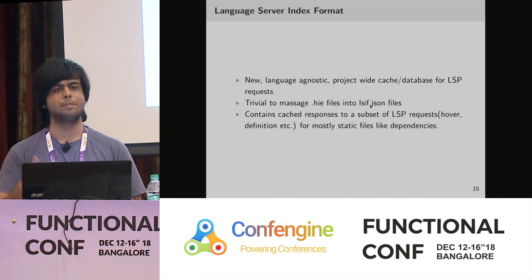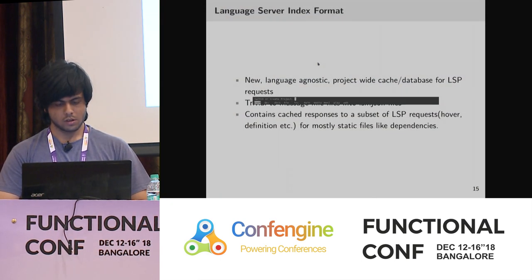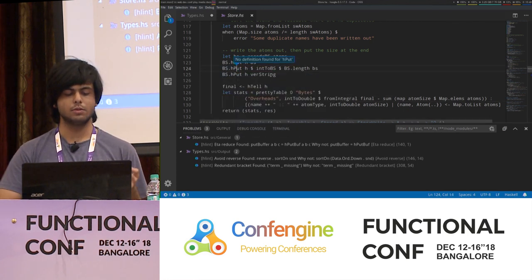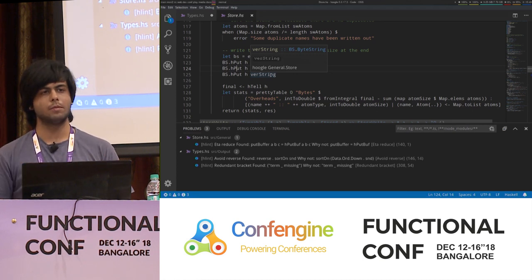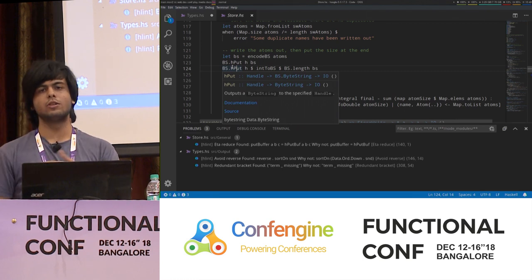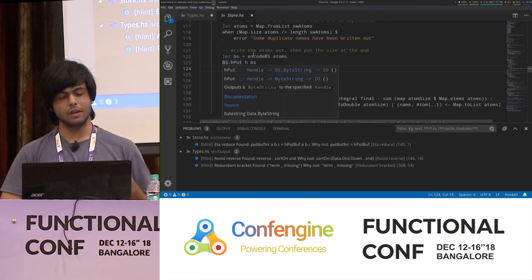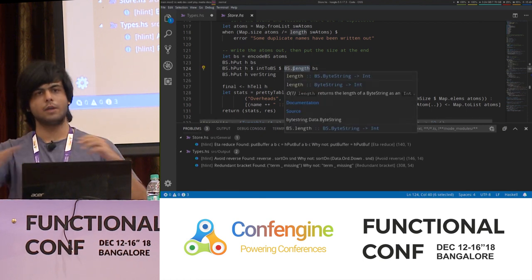It's mostly useful for dependencies and things that don't change much — static files. Currently I can't jump to the definition of a dependency because the source may not even be available. When Stack or whatever builds something like bytestring, it doesn't keep the source around for HIE to be able to access it and show you the definition.